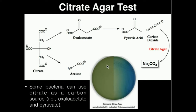So the citrate agar would actually start out more like the color on the left side here — it would start out green. And if the bacteria inoculated onto it is able to use citrate as a carbon source, we will form sodium carbonate and it will actually turn the agar blue because of the pH indicator bromothymol blue. Blue on the citrate agar is indicative of bacteria that are able to use citrate as a carbon source.